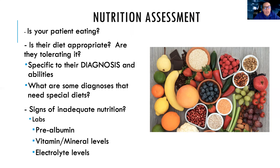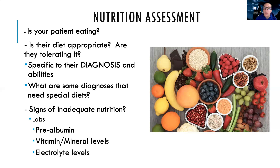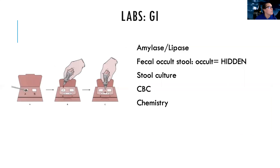We also want to look for signs of inadequate nutrition through labs — like the prealbumin. We can also look at vitamin, mineral, and electrolyte levels. Additionally, we get the albumin. The real difference is that prealbumin is like the baby albumin — it tells us how much of that protein we're currently making, and if we're not making much, it's usually a sign of malnutrition. Whereas albumin hangs around in the body for a while, similar to red blood cells — so you can have a good amount of albumin but still not be making enough new albumin. Both are helpful, so we check prealbumin, albumin, vitamins, minerals, and electrolytes, as all of those are related.